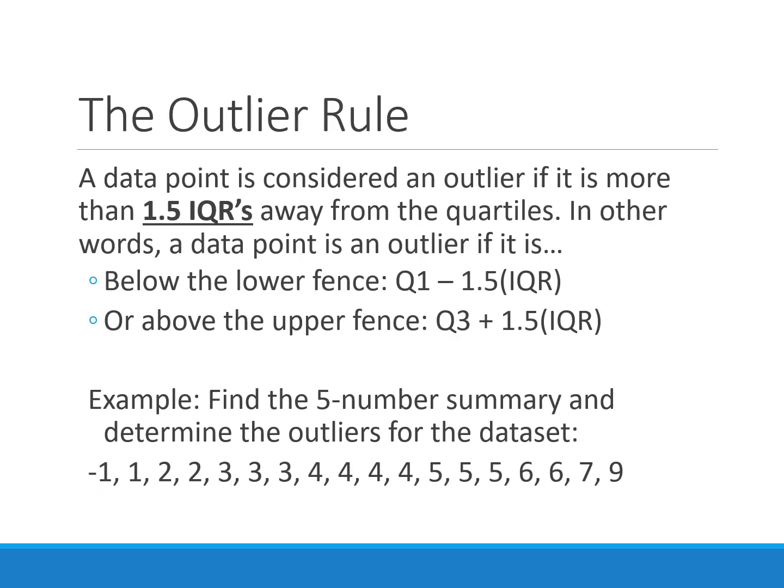Before we make a box plot, there's the outlier rule. If something is more than one and a half IQRs away from the quartiles, we identify it as an outlier. Specifically: Q1 minus 1.5 × IQR gives us the lower fence — any data values below that are outliers. Q3 plus 1.5 × IQR gives us the upper fence — anything above that is an outlier. For the example data set, the IQR is Q3 minus Q1, which equals 2. The lower fence is Q1 (3) minus 1.5 × 2 = 0, so negative one is an outlier. The upper fence is Q3 (5) plus 1.5 × 2 = 8, so nine is an outlier.